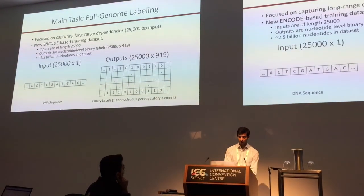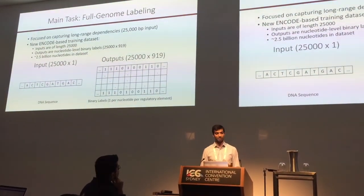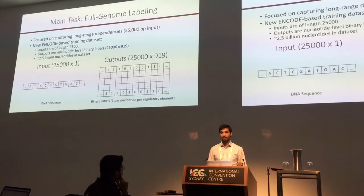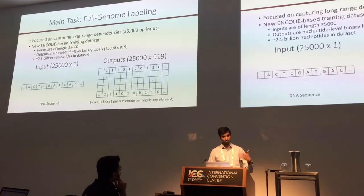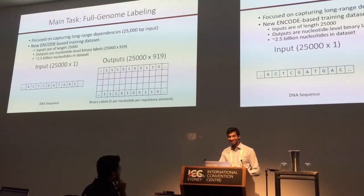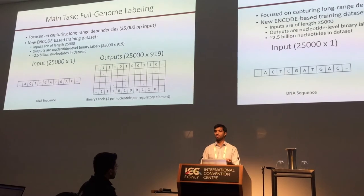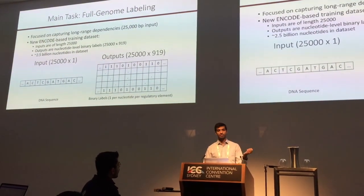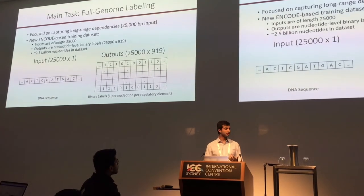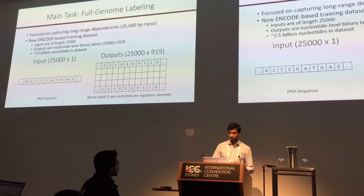Now we can scale this up to focus on capturing long-range dependencies. We went with the approach of modeling essentially the entire genome. Inputs are of length 25,000 at a time — more than two orders of magnitude larger than before. The outputs are nucleotide-level labels: for every nucleotide, we predict whether all regulatory markers are present. We did this for effectively the entire genome, with some filtering and pre-processing using the same inputs as Zohan and Trojansky, producing about 2.5 billion nucleotides. Our training data is thus 2.5 billion by 919.